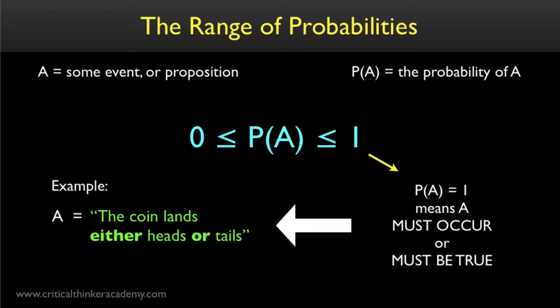Given a set of mutually exclusive and exhaustive possibilities, the probability that one of these possibilities will be realized is equal to one.